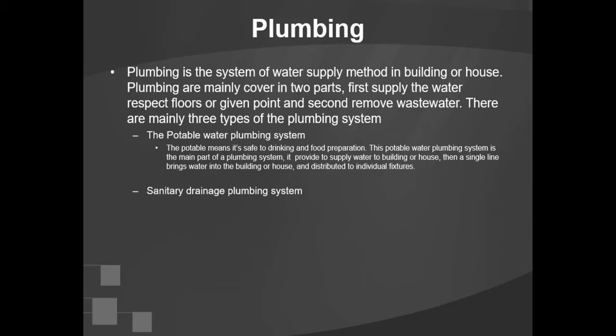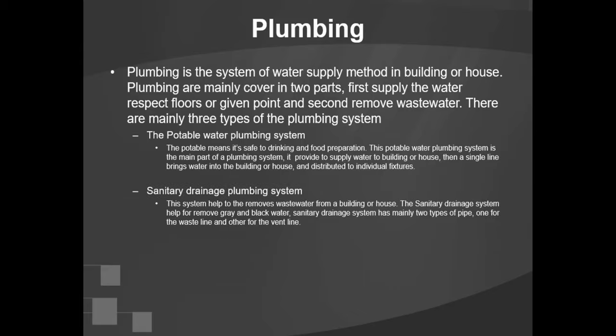The second one is the sanitary drainage plumbing system. This system helps to remove waste water from a building or house. The sanitary drainage system helps remove grey and black water. It has mainly two types of pipe: one for the waste line and the other for the vent line.